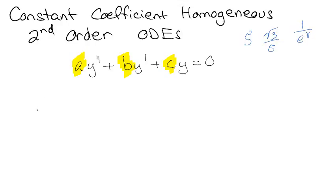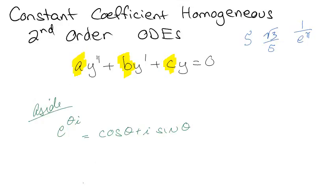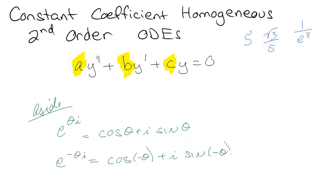Before we can do that, we need a quick aside just to make sure you remember something. There's this math identity that says e to the θi equals cosine θ plus i sine θ. Now if I plug in negative θi, that would mean cosine of negative θ plus i times sine of negative θ. Cosine of negative θ is cosine θ because it's an even function, and sine is an odd function, so it's minus sine θ.